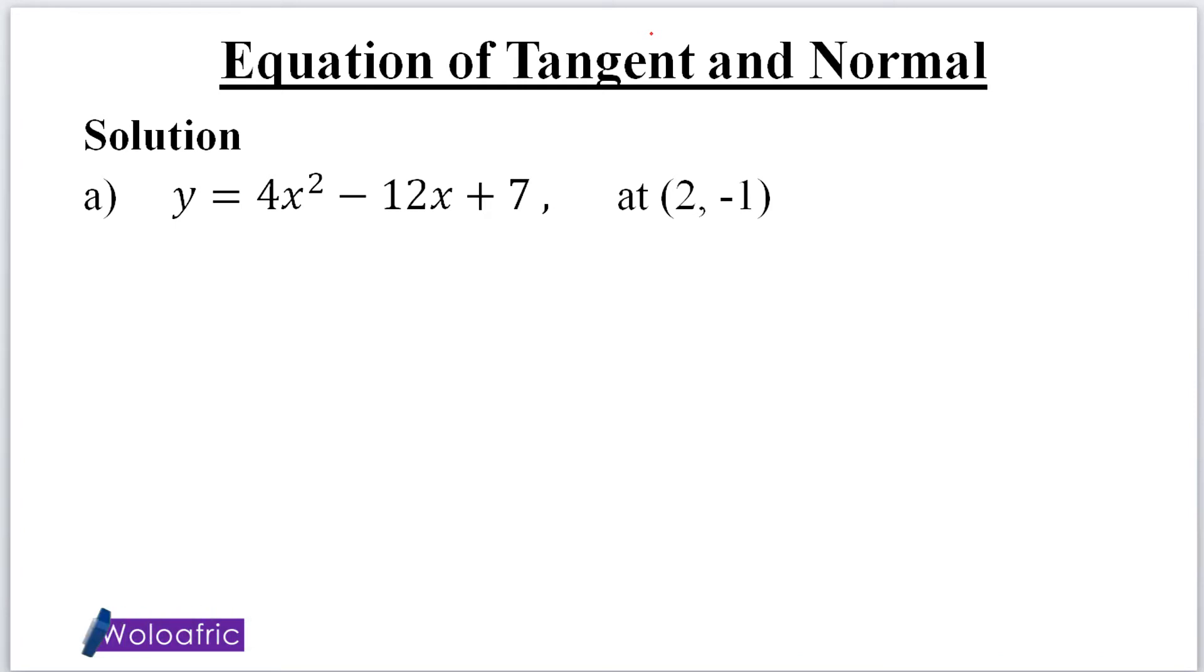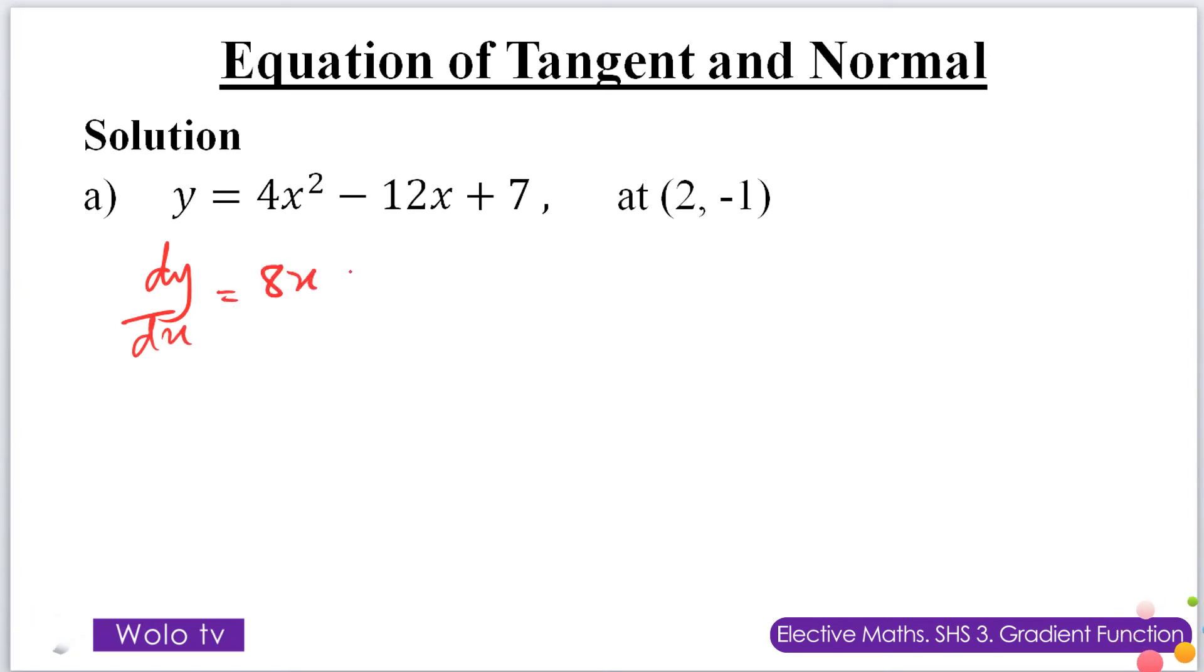Number one, y equals 4x squared minus 12x plus 7. We first of all differentiate. So your dy dx will give you 8x minus 12.